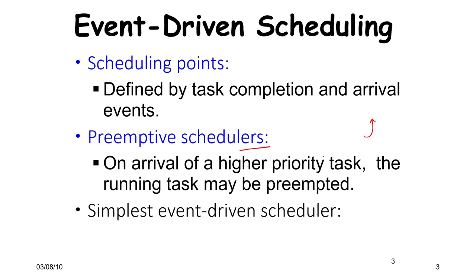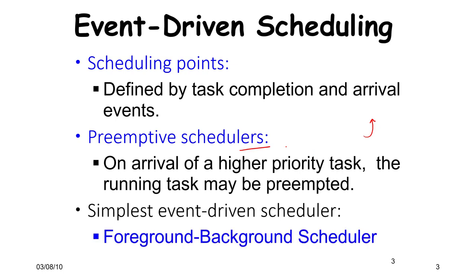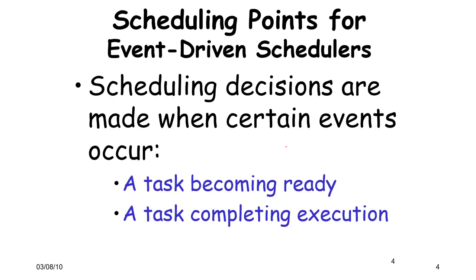If there is a need, the running task may be stopped and restarted later. The system on which the tasks are running needs to support this — any hardware with an operating system can. The simplest event-driven scheduler is the foreground-background scheduler, where a background process is stopped when a foreground process arrives. Scheduling decisions are made when certain events occur: a task either becomes ready or another task completes — these are the two primary kinds of events.